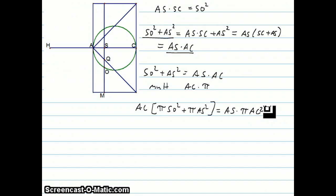Now we can do a couple of substitutions. AC over here is equal to AH. So I'm going to change that to AH pi SO squared. Now AS is actually equal to SQ because this is an isosceles right triangle. So I can say plus pi SQ squared equals AS times pi.